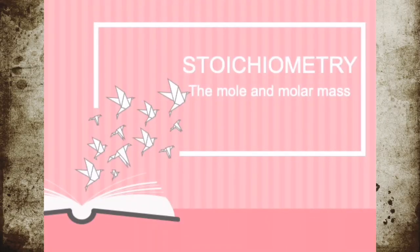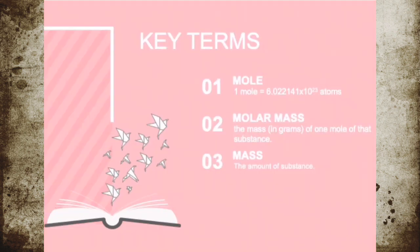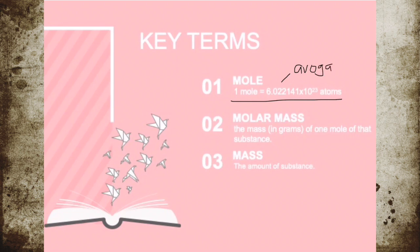In this video, we will be covering stoichiometry for moles, molar mass, and Avogadro's number. First, here are the key terms. What is a mole? A mole is just a number of things. One mole is equivalent to 6.022141 times 10 to the power of 23 atoms. 6.022 times 10 to the power of 23 is what we call Avogadro's number — the number of atoms or molecules per mole.